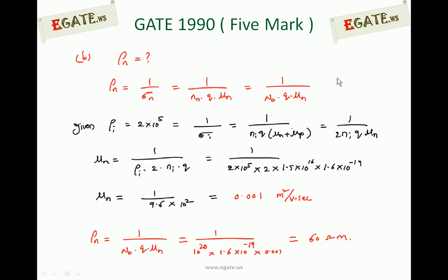Intrinsic resistivity ρi = 2×10⁵, which equals 1/(Ni×q×(μn + μp)). Since μn = μp, this becomes 1/(Ni×q×2μn). So μn = 1/(ρi × 2 × Ni × q) = 0.001 m²/V·s. This is the electron mobility, same as hole mobility in this problem. Substituting into ρn = 1/(Nd×q×μn): with Nd = 10²⁰, q = 1.6×10⁻¹⁹, μn = 0.001, we get ρn = 60 ohm-meters.